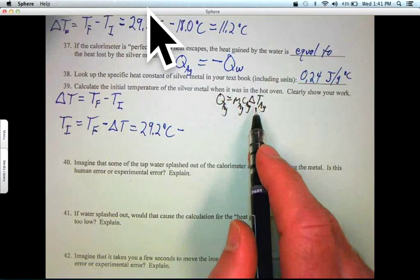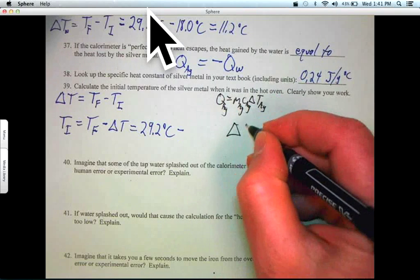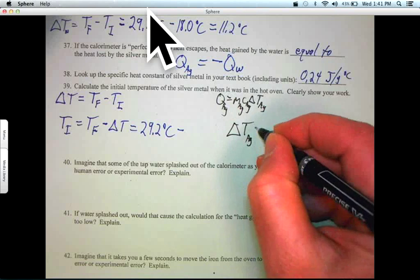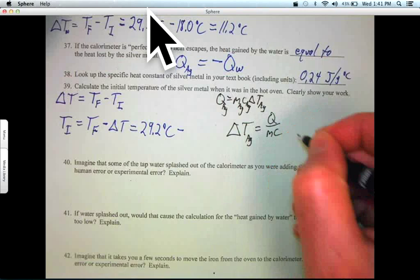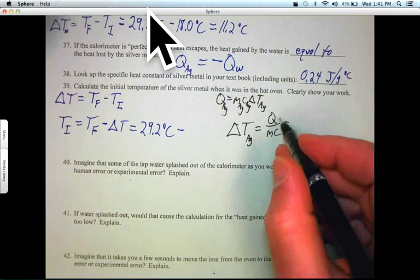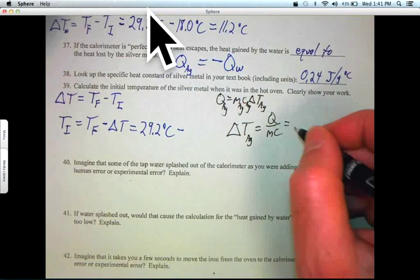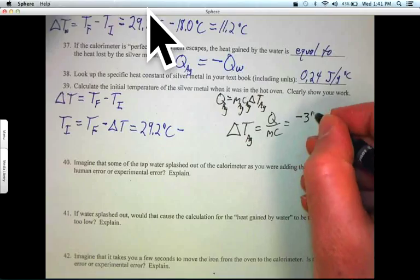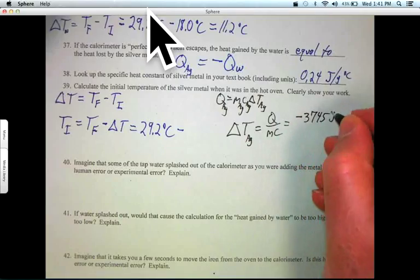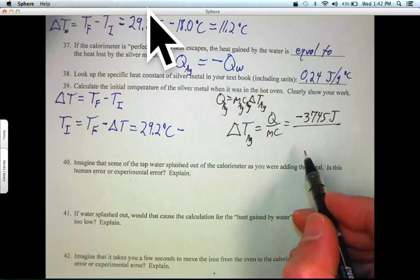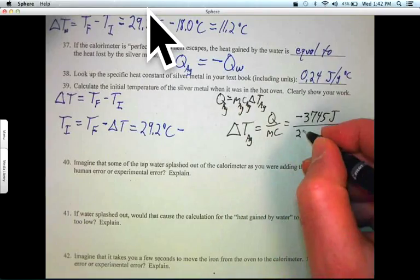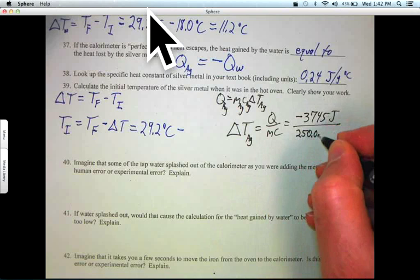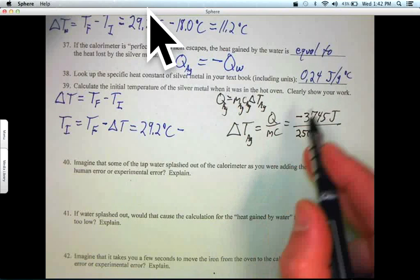So we're trying to find delta T. Delta T of the silver equals Q over MC. Equals Q over MC of the silver. We know Q of the silver minus 3745 joules. We know M of the silver. That was from above 250 grams and the specific heat of silver.